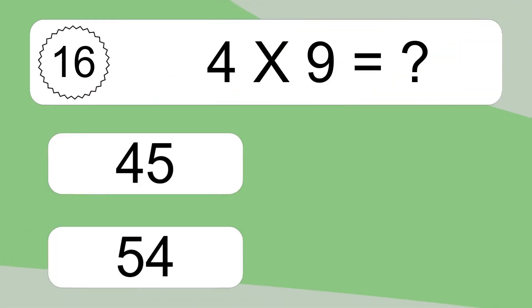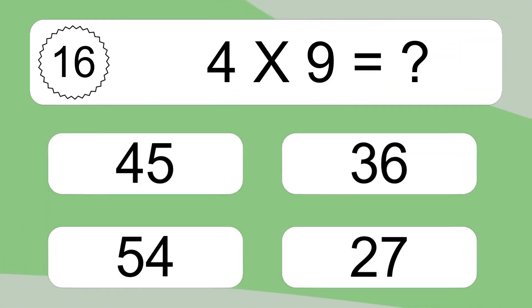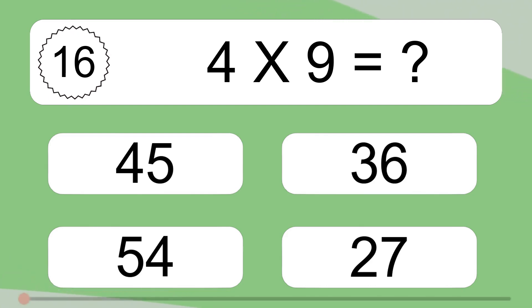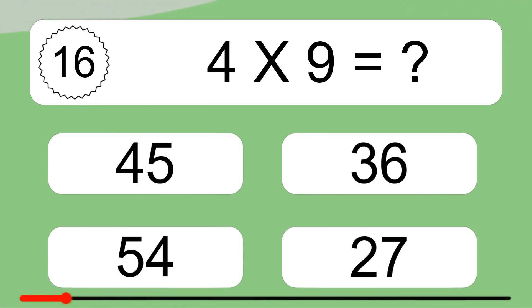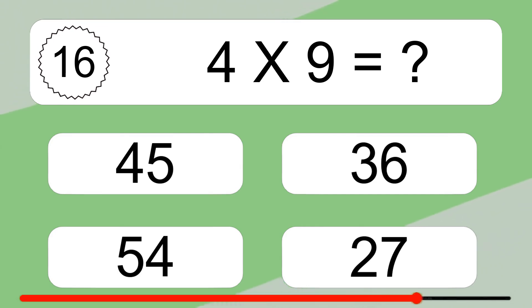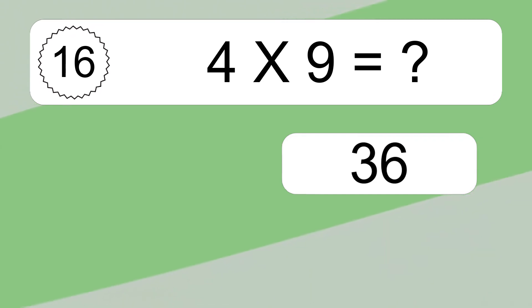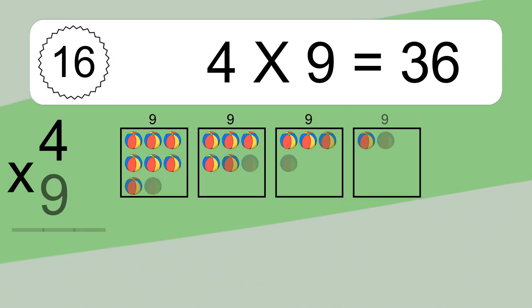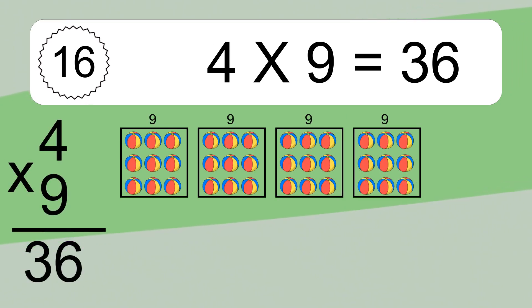4 times 9 equals what? 4 times 9 equals 36.